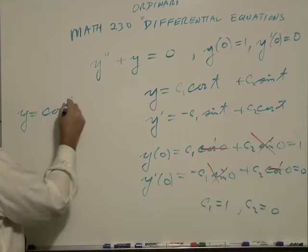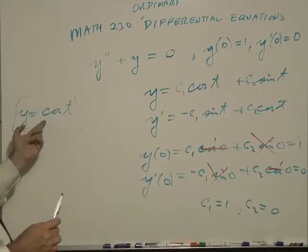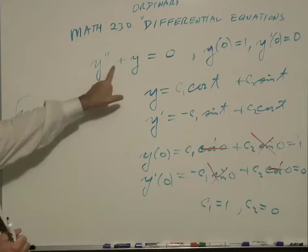So with this restriction on the problem, my solution is now somewhat more restricted. Y equals cosine of t is the solution to this differential equation.